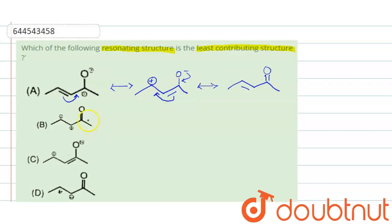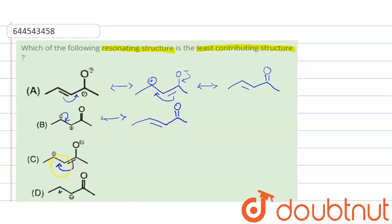Coming to the second resonating structure, there is a negative charge on carbon and a positive charge on the adjacent carbon. The carbanion donates its electrons to form a pi bond, and it will readily form the stable molecule.